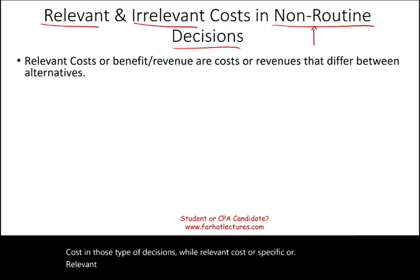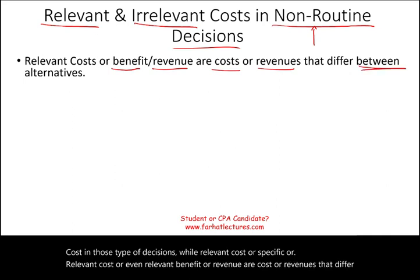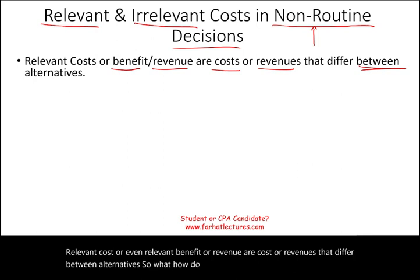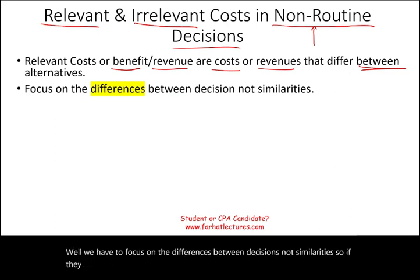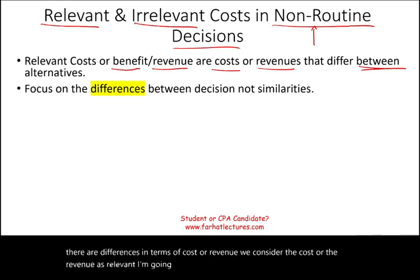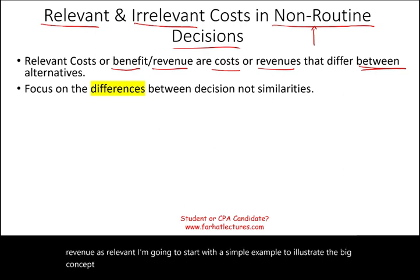Relevant cost — or even relevant benefit or revenue — are costs or revenues that differ between alternatives. To consider something relevant, we have to focus on the differences between decisions, not similarities. If there are differences in terms of cost or revenue, we consider that cost or revenue as relevant. We'll start with a simple example to illustrate the concept, then focus on specific numerical examples.